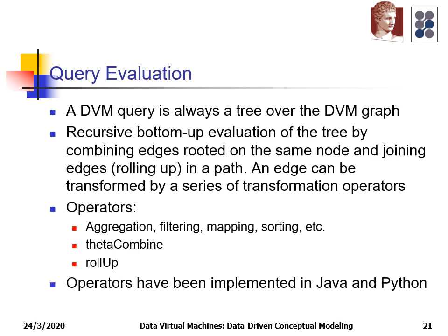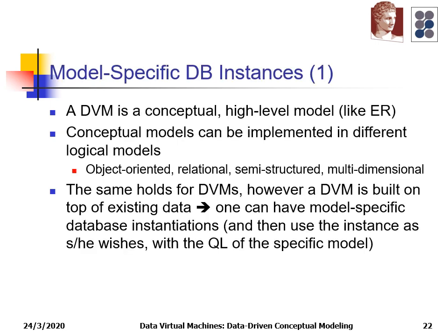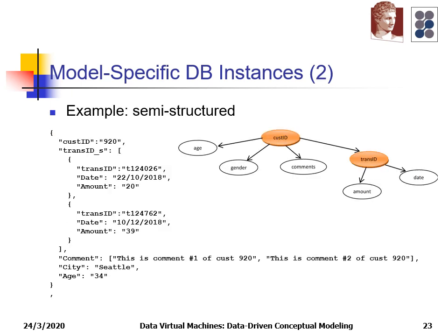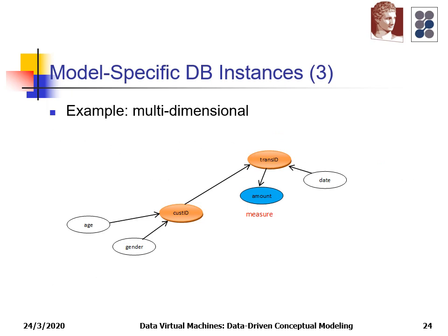The operators have been implemented in Java and Python. The DVM is a conceptual high-level model like ER, and can be implemented in different logical models such as object-oriented, relational, semi-structured, and multidimensional. A data virtual machine is built on top of existing data, so one can generate different model-specific databases and use them with the query language of the specific model — for example, generating a collection of JSON documents or instantiating a multidimensional model.